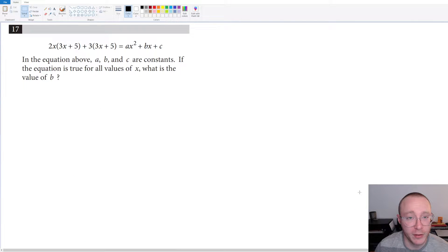All right, so for number 17 here we have a student response question that means no multiple choices. Let's just see if we can figure out the answer based on what they give us. So they're starting us off here with a lengthy expression here. We've got 2x times 3x plus 5 plus 3 times 3x plus 5 equals ax squared plus bx plus c. So right off the bat once you see that we are setting this equal to sort of a blank quadratic expression, right? And I mean blank in the sense that we don't know the coefficients.